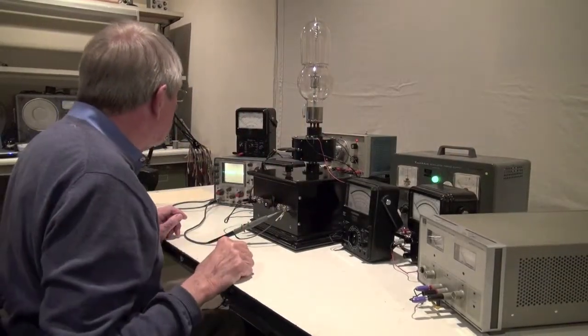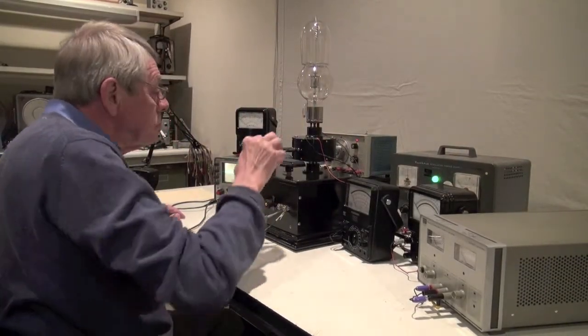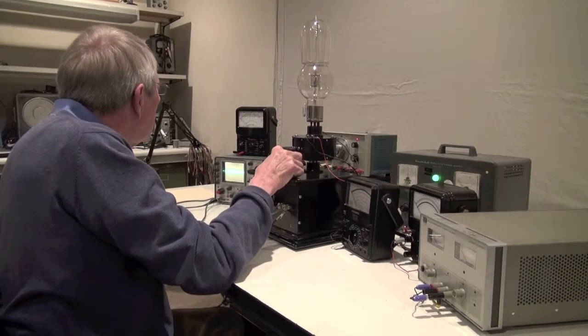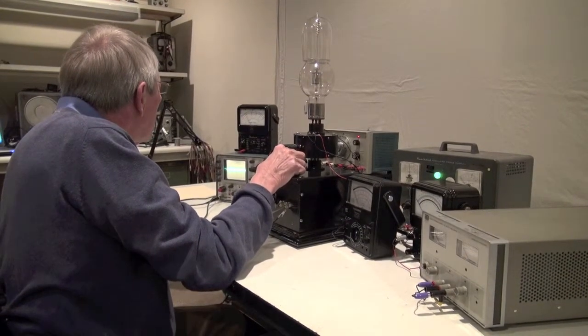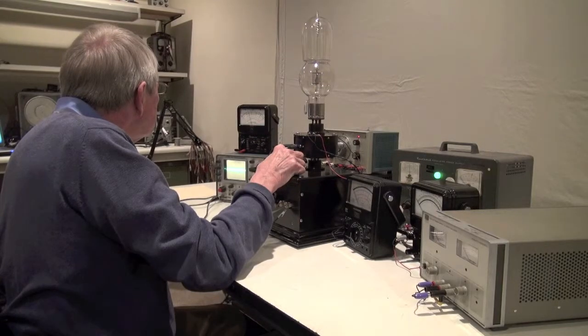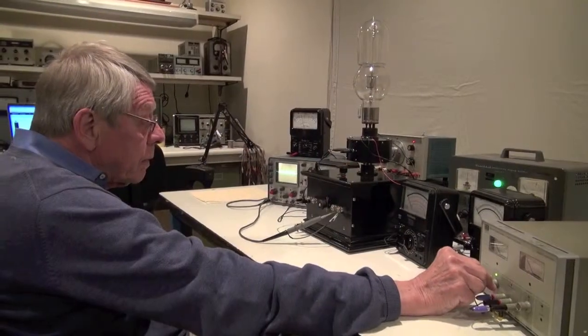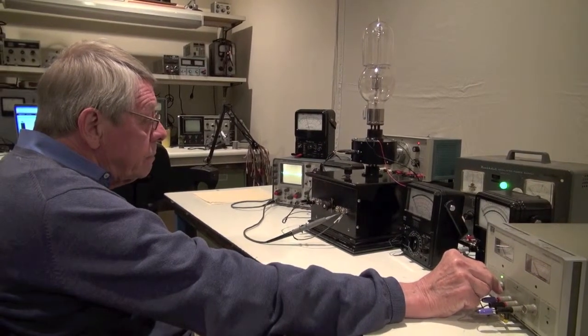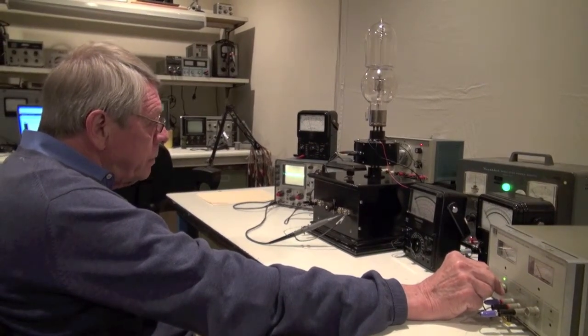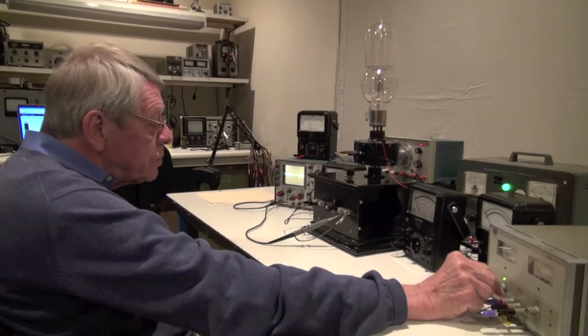Okay, I have 220 volts anode. Got it. I will put the grid voltage plus 15. The grid is positive. And we do have filament current. It's slowly coming up.